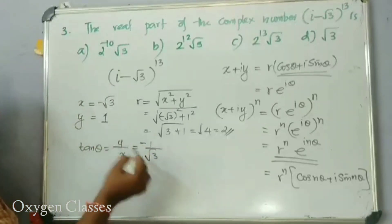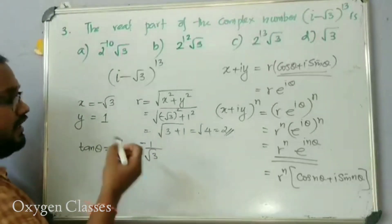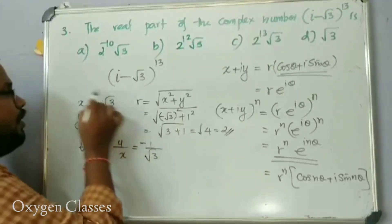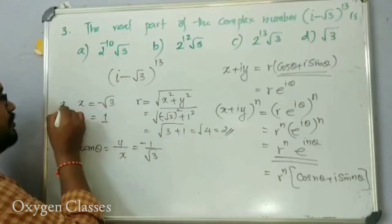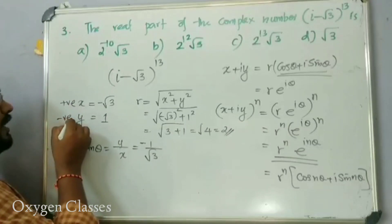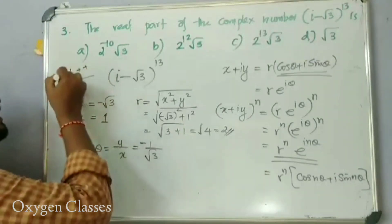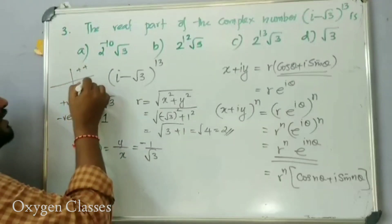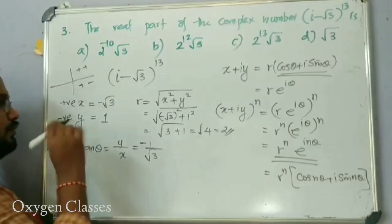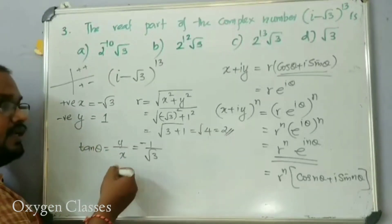For this complex number (i minus root 3), we identify x is positive and y is negative — this places it in the fourth quadrant. In the fourth quadrant, we use a negative angle.